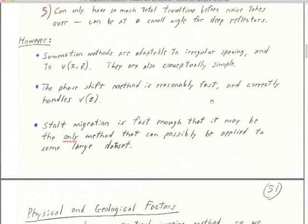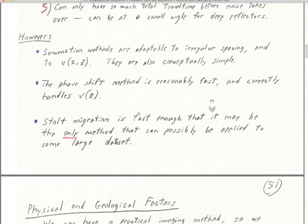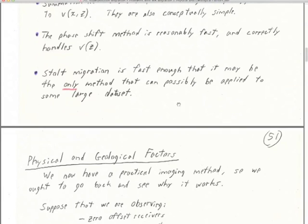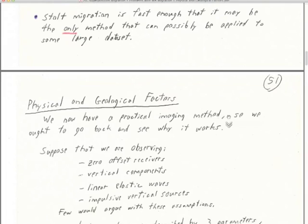The phase shift method is reasonably fast and correctly handles velocity as a function of depth. Stolt migration is fast enough to be easy to use in the field, and since you only have to put in one velocity, that's only one value to get wrong. Sometimes you can use it for velocity analysis, and it's easy to apply to a large data set in the field without even transmitting data back home. So it's still used.